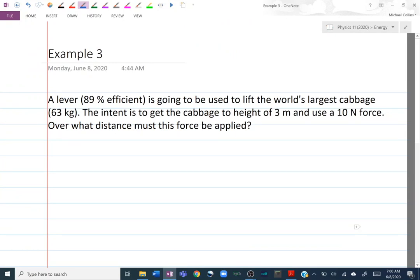Example 3. A lever is 89% efficient. It's going to be used to lift the world's largest cabbage, 63 kilograms. The intent is to get the cabbage to a height of 3 meters using a 10-newton force. Over what distance must this force be applied? So we've got a little fulcrum here, which is just something that the lever rests on. And then we've got what turns out to be a really long lever. And then we've got our cabbage down the end. In order to make a lever work, you're going to push down on the end. And then in response, the cabbage will lift up.